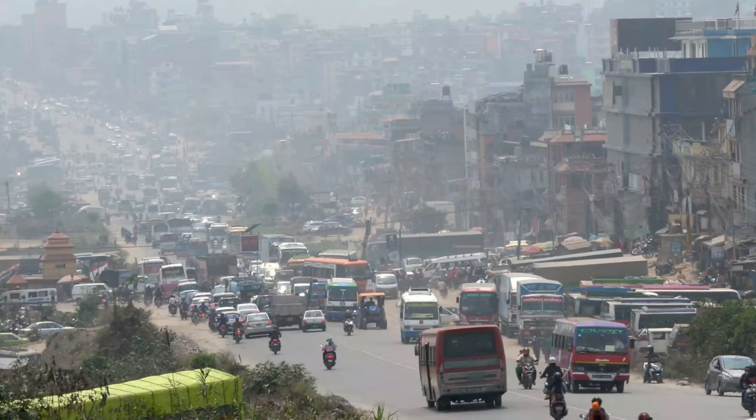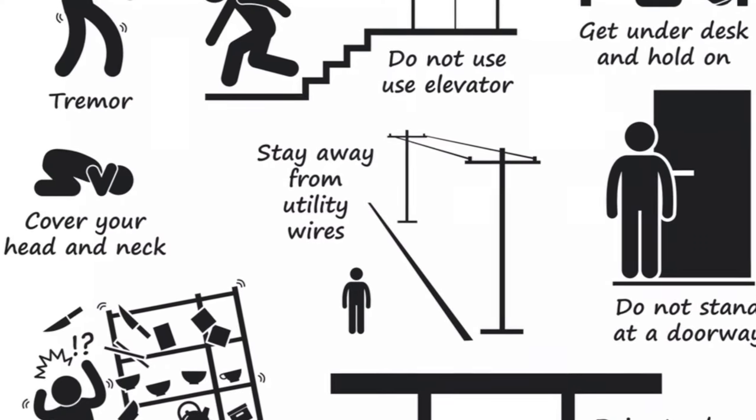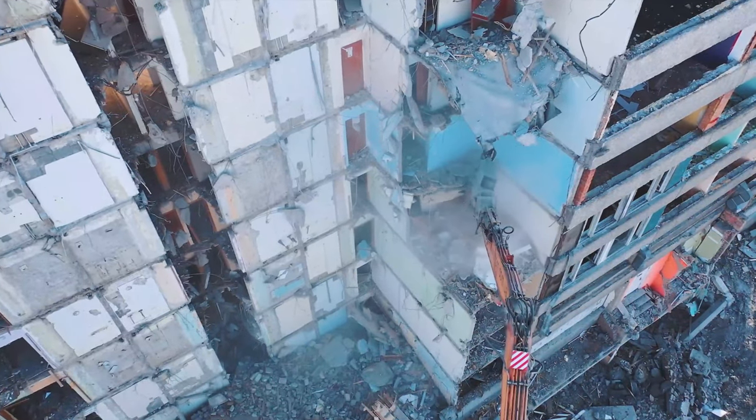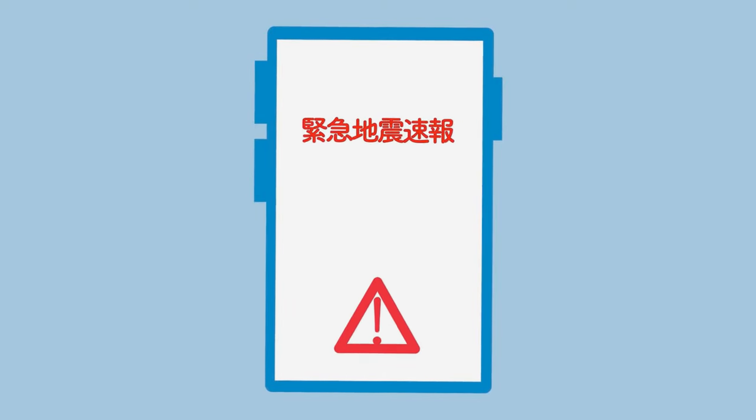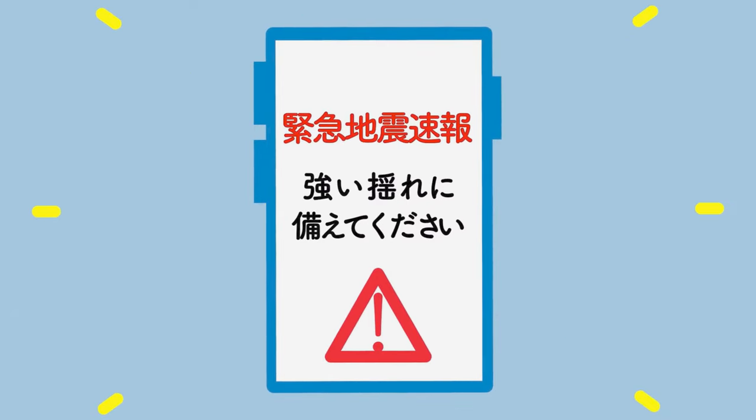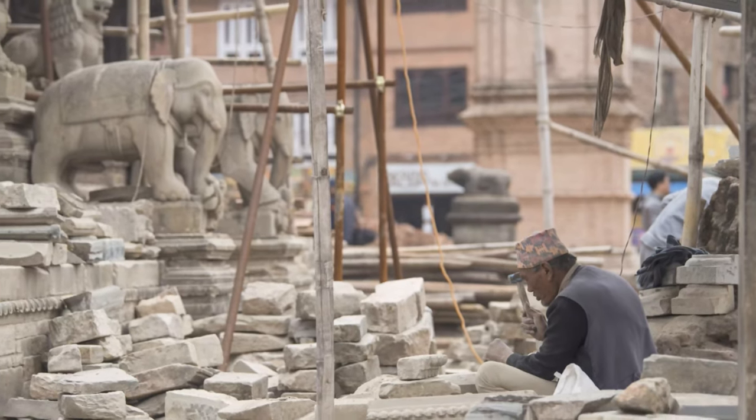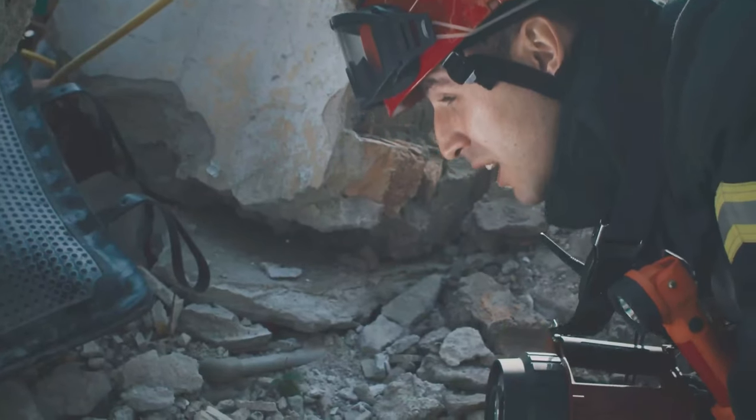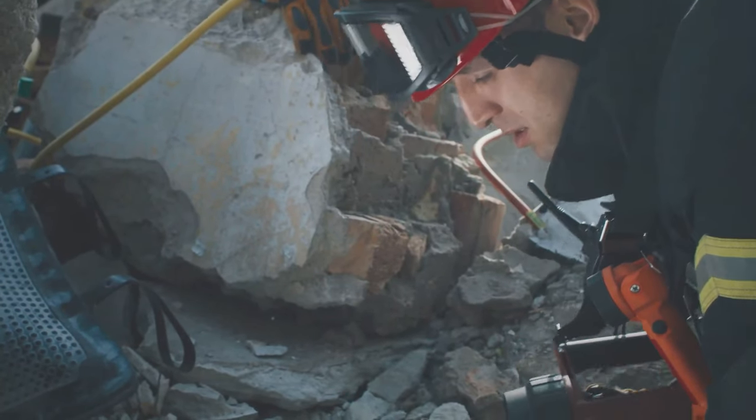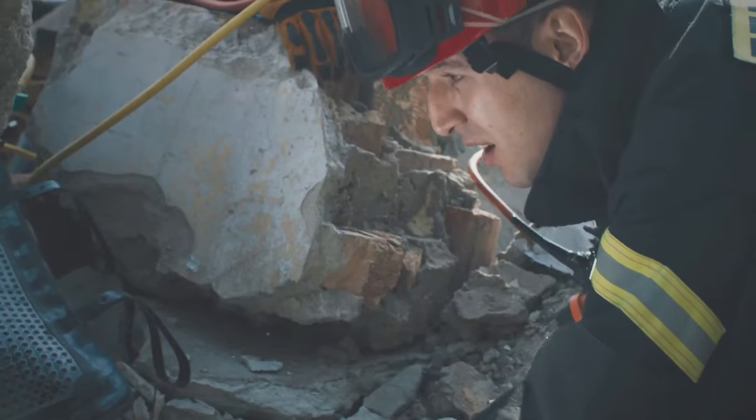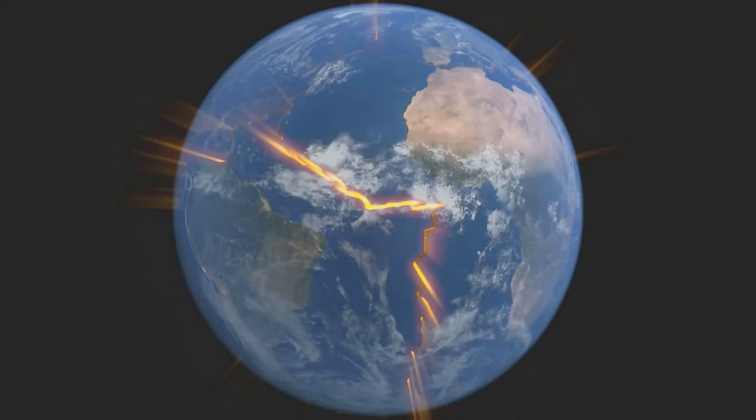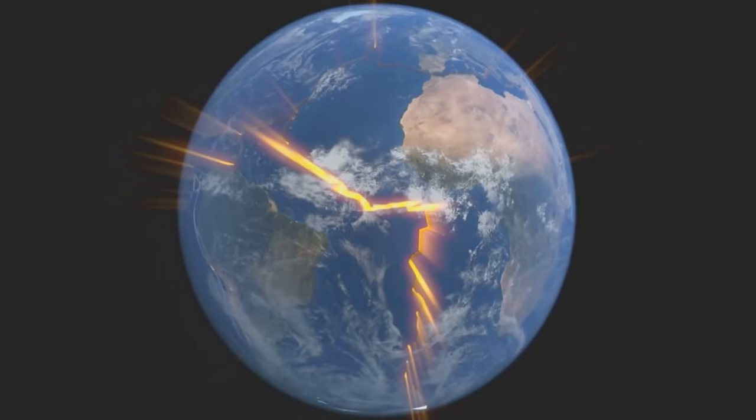When earthquakes strike, these structures become death traps for the inhabitants. Despite the challenges, there are ongoing efforts to mitigate earthquake risks in Nepal. Experts are introducing earthquake-resistant building techniques, creating structures designed to withstand seismic stress. Early warning systems are also being developed, aiming to provide precious seconds of alert before an earthquake strikes.